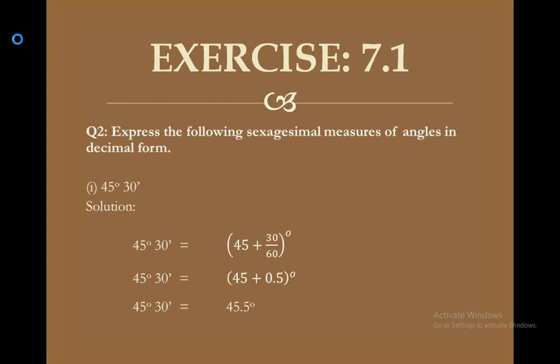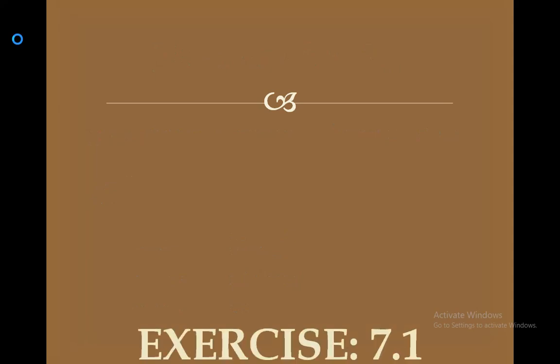Next, question 2: express the following sexagesimal measures of angles in decimal form. An angle measured in degrees is called the sexagesimal system. Part 1 is 45 degrees 30 minutes. We have 45 plus, to convert minutes into degrees we divide by 60, so 30 upon 60 gives 0.5. Combining, the answer is 45.5 degrees.